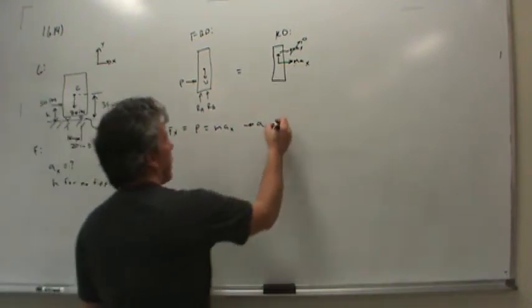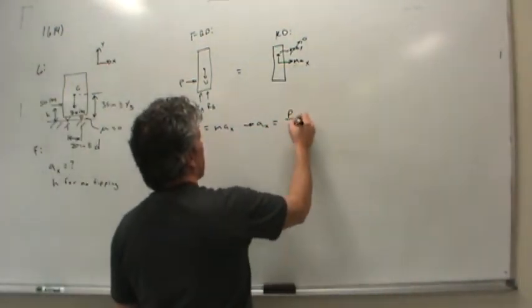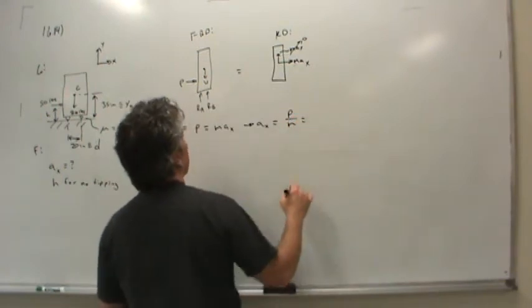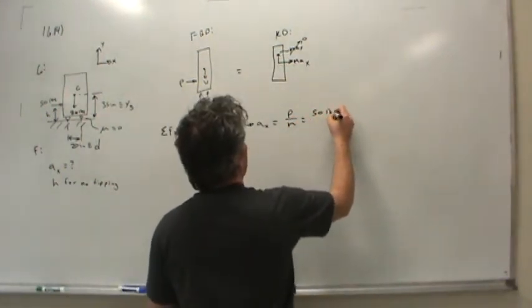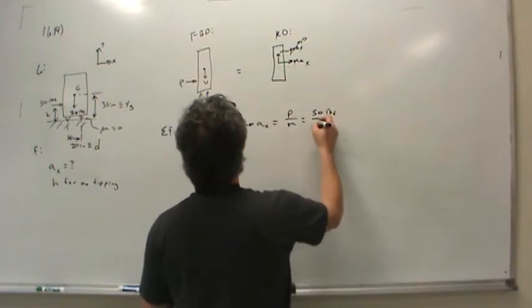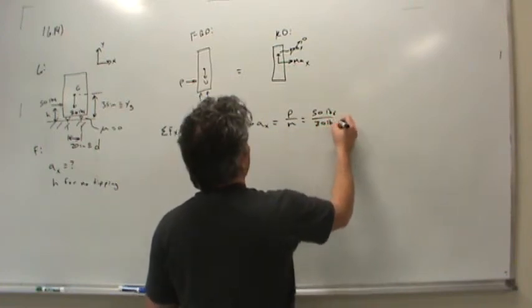Okay, so Ax is pretty easy to come up with. It's just the force divided by mass. Well, the force being applied is 50 pounds, and the mass is simply 80 pounds.